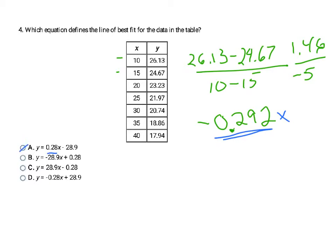Looking at the answer choices: A is positive, so it can't be A — it has to be negative. B is 28, and I'm looking for something less than 0, so it can't be B. C is positive 28, so it's not even negative. Then D is negative 0.28, and 0.29 is pretty similar to my calculated value. I've already ruled out my other choices, so my answer is D.